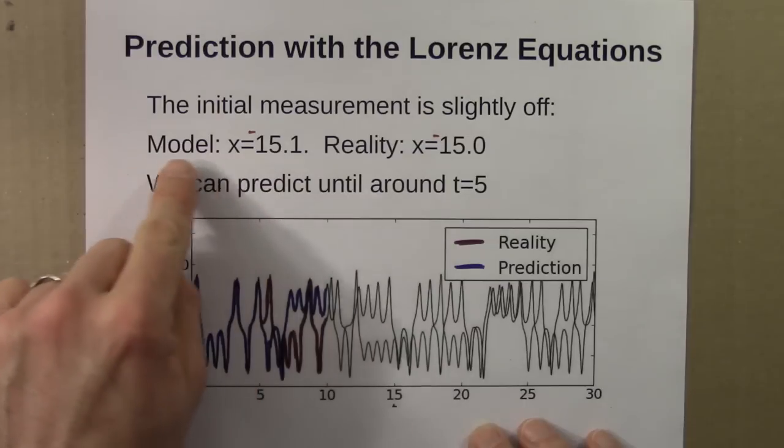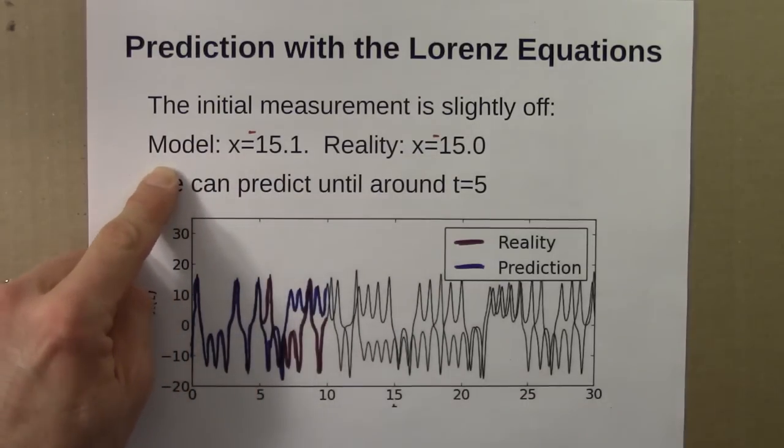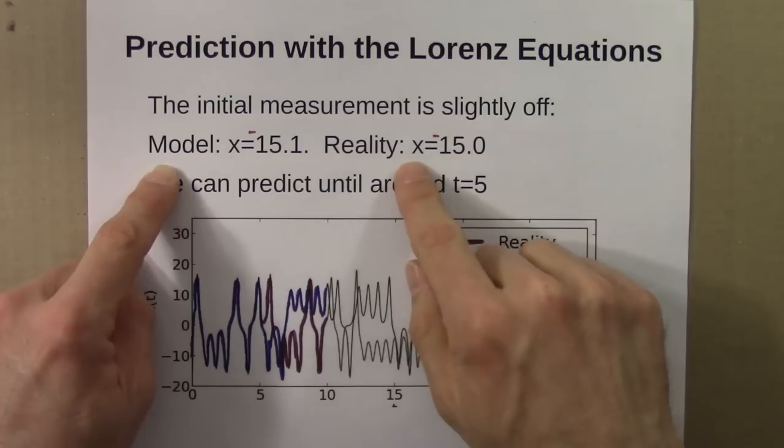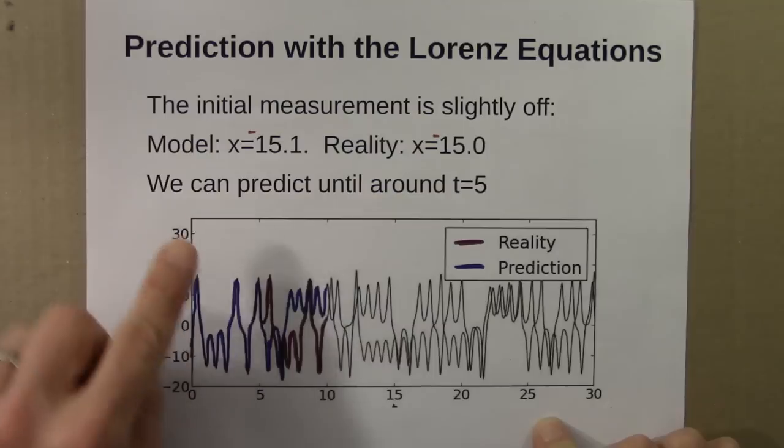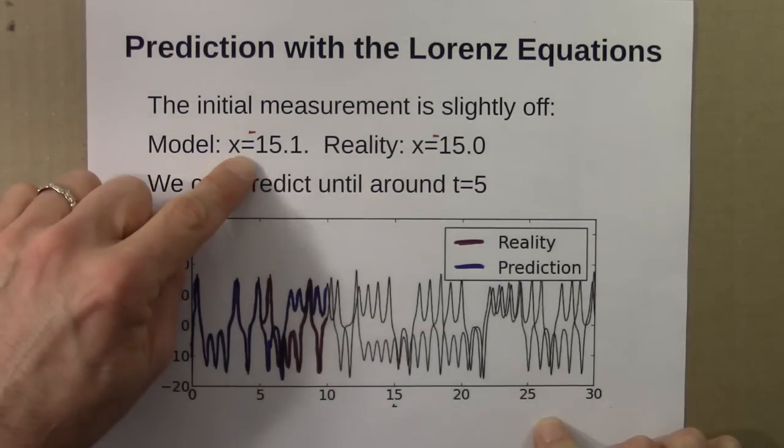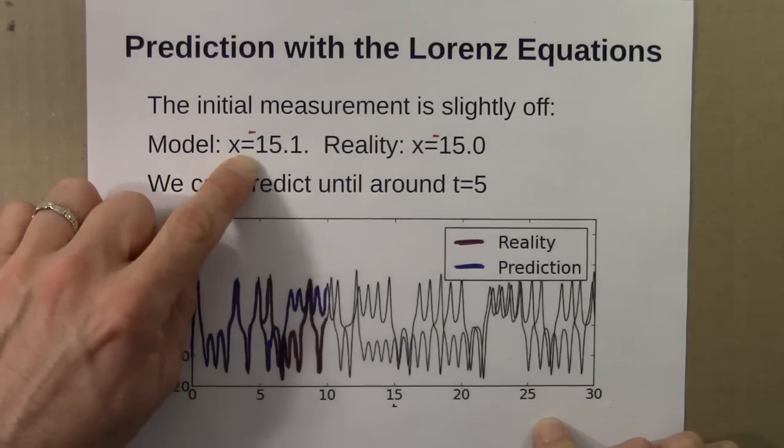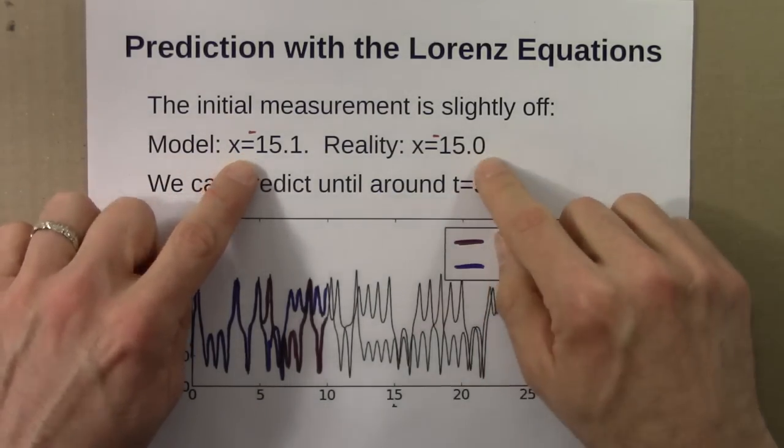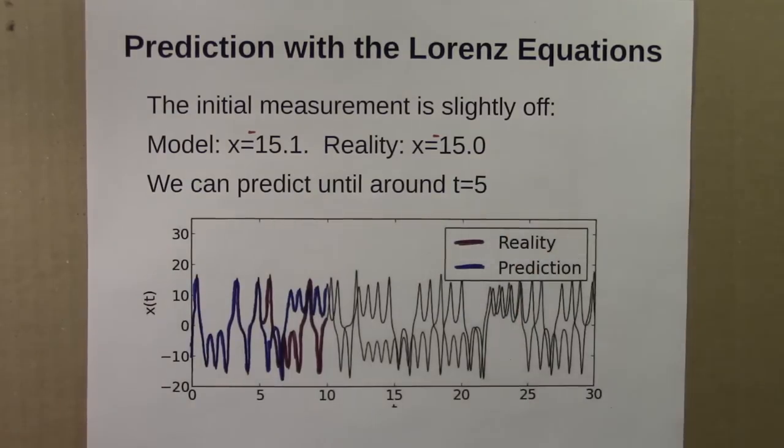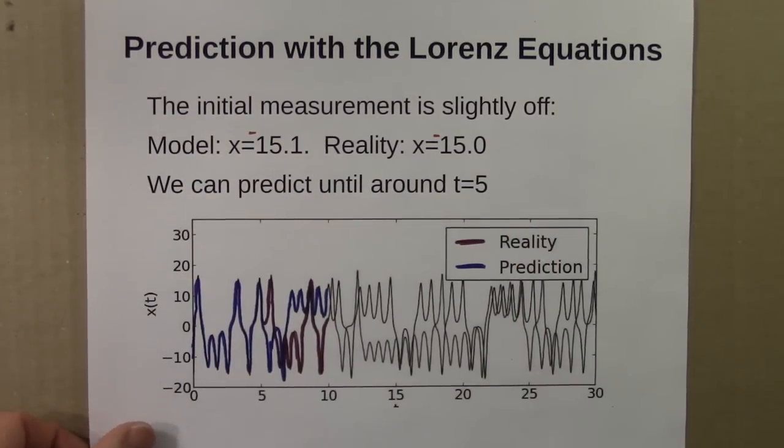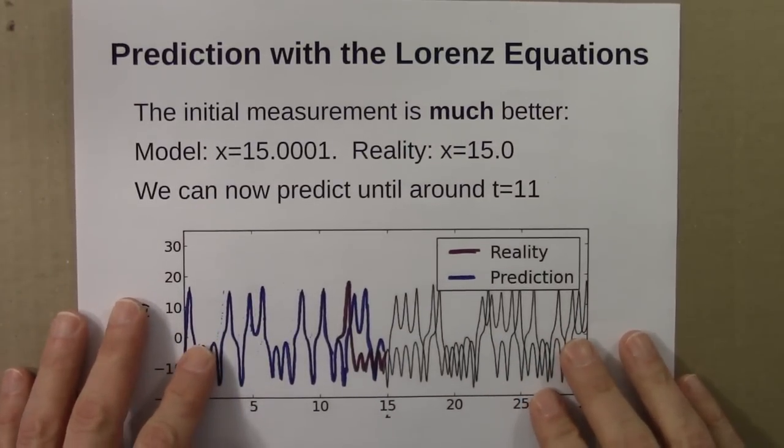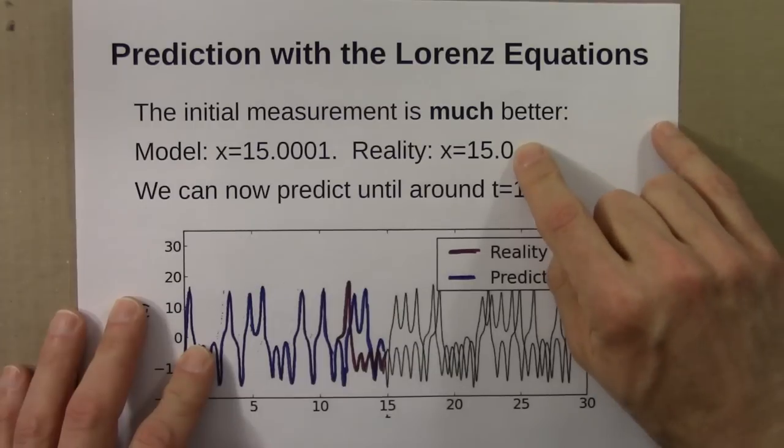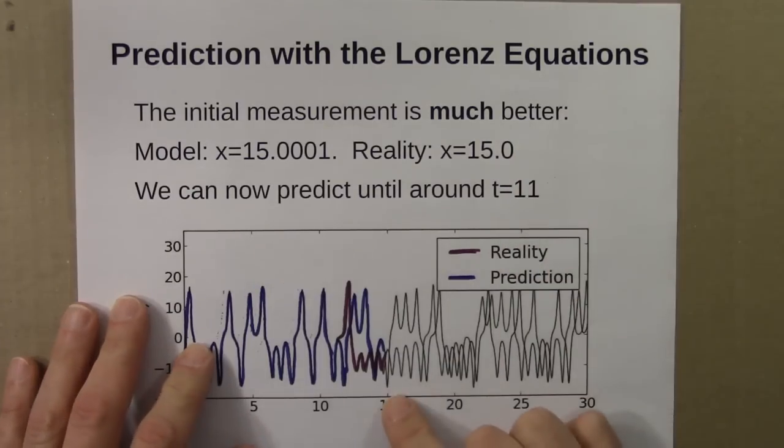The small differences in initial conditions make a pretty big difference after 5 minutes. Suppose that we made a better measurement. Our model is correct. The reality and the model are both doing the Lorenz equations, following that rule. But the problem is that our initial condition is wrong. It's 15.1 when in reality it's 15.0. Let's try a much better initial condition, from 15.1 to 15.0001, and reality is still 15.